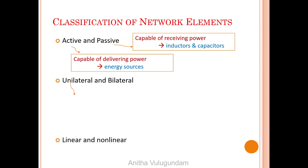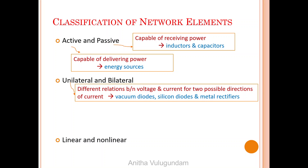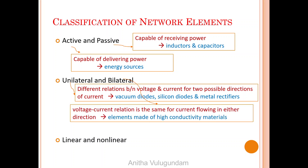Unilateral elements have different relations between voltage and current for the two possible directions of current. Examples are vacuum diodes, silicon diodes, and metal rectifiers. Whereas in a bilateral element, the voltage-current relation is the same for current flowing in either direction. Elements made of high conductivity materials come under bilateral elements.